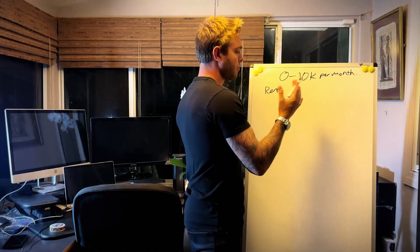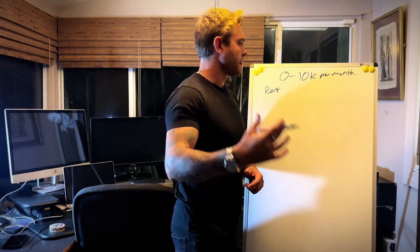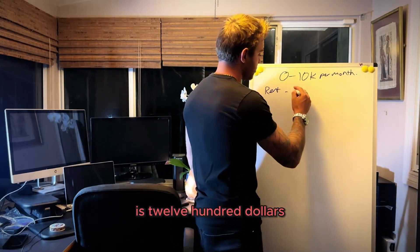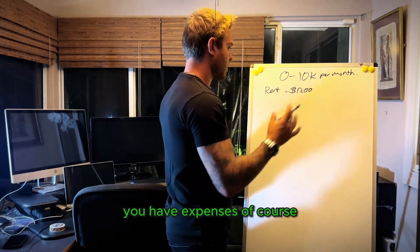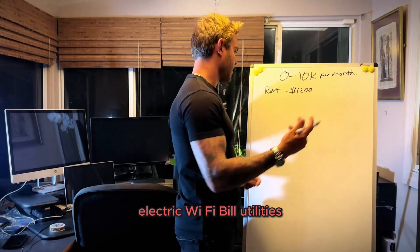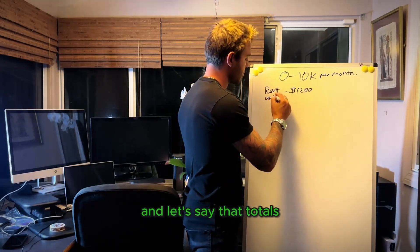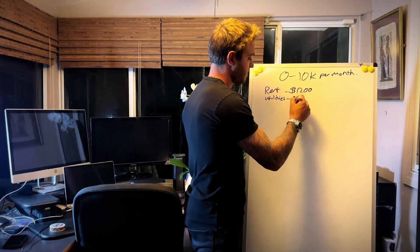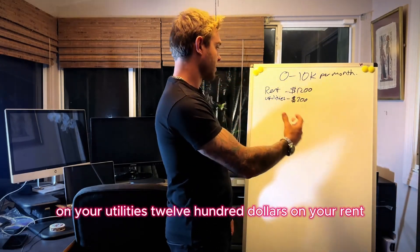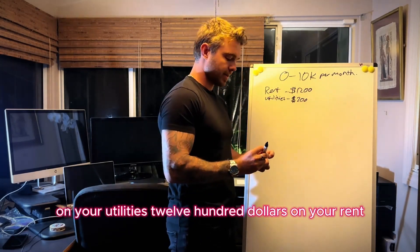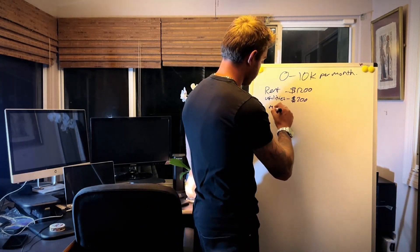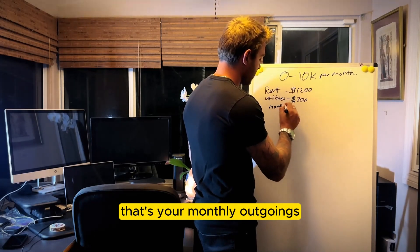Let's say your rent per month on a two-bed, one-bath apartment in Austin, Texas is $1,200 per month. You have expenses of course — electric, Wi-Fi, utilities — and let's say that totals $200 a month. So $200 on utilities, $1,200 on rent, you're at $1,400 a month total expenditure. That's your monthly outgoings.